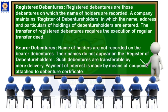Let us move to the next category, that is on the basis of transfer. There are two types of debentures: registered debentures and bearer debentures. Registered debentures are those on which the name of the debenture holder is recorded. The company has to maintain a register of debenture holders, which contains information like name, address, and holdings of debentures. Whenever the debenture holder sells or transfers the debentures, the necessary changes are made in this register. The debenture certificate is titled with the name of the debenture holder, so when selling, they have to go through transfer procedures.